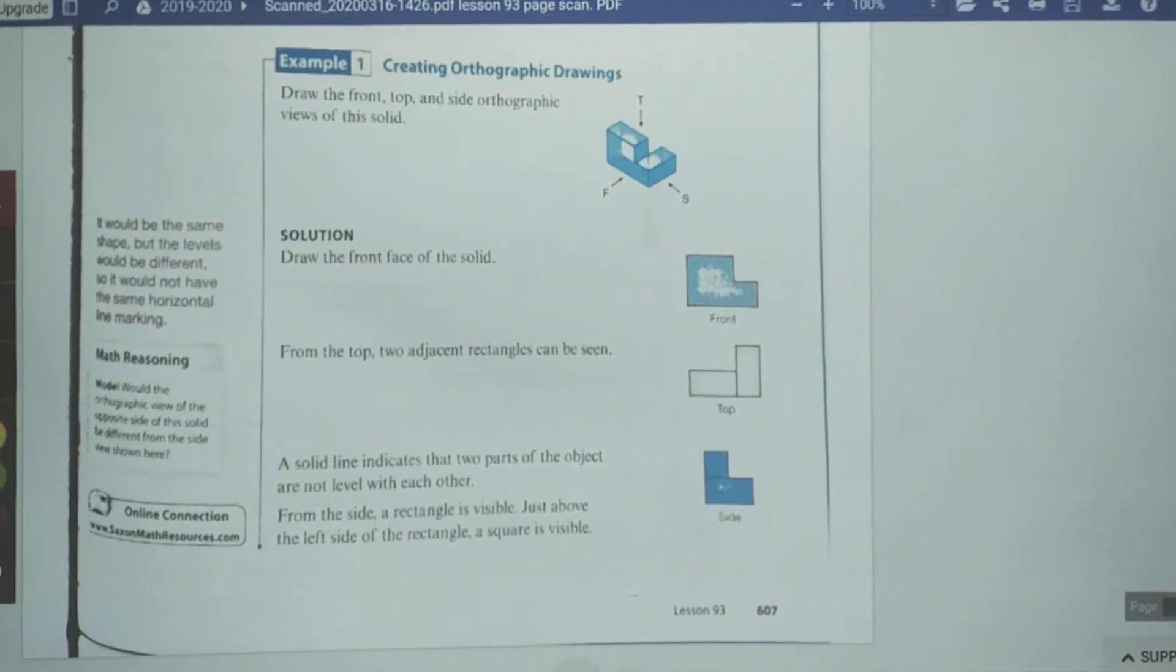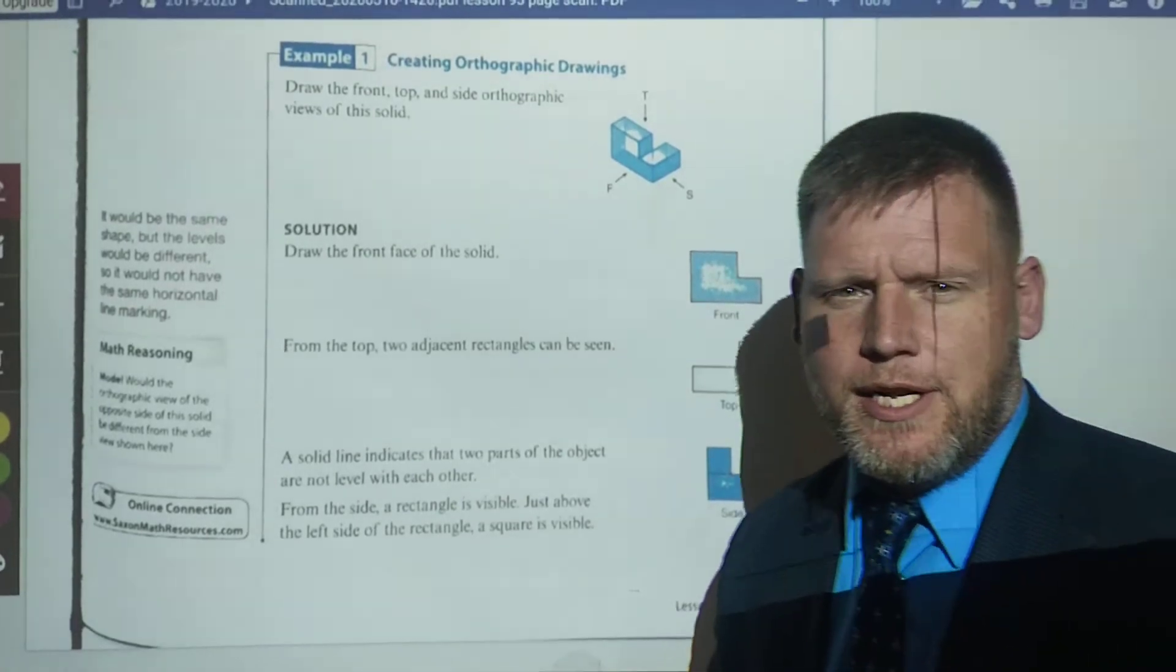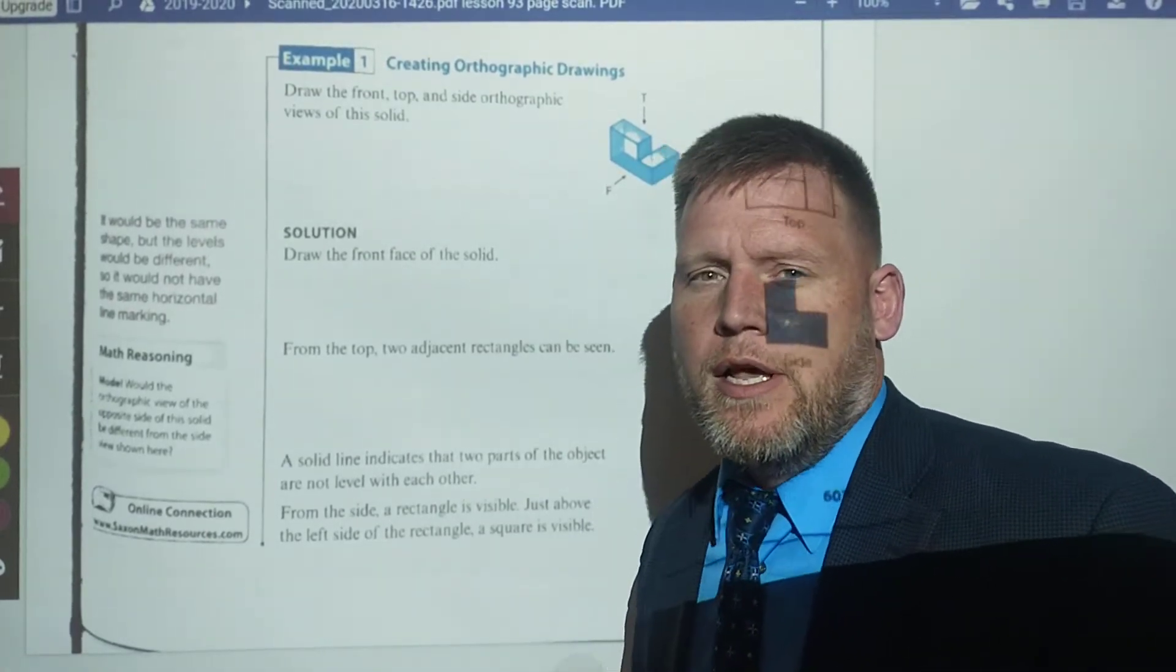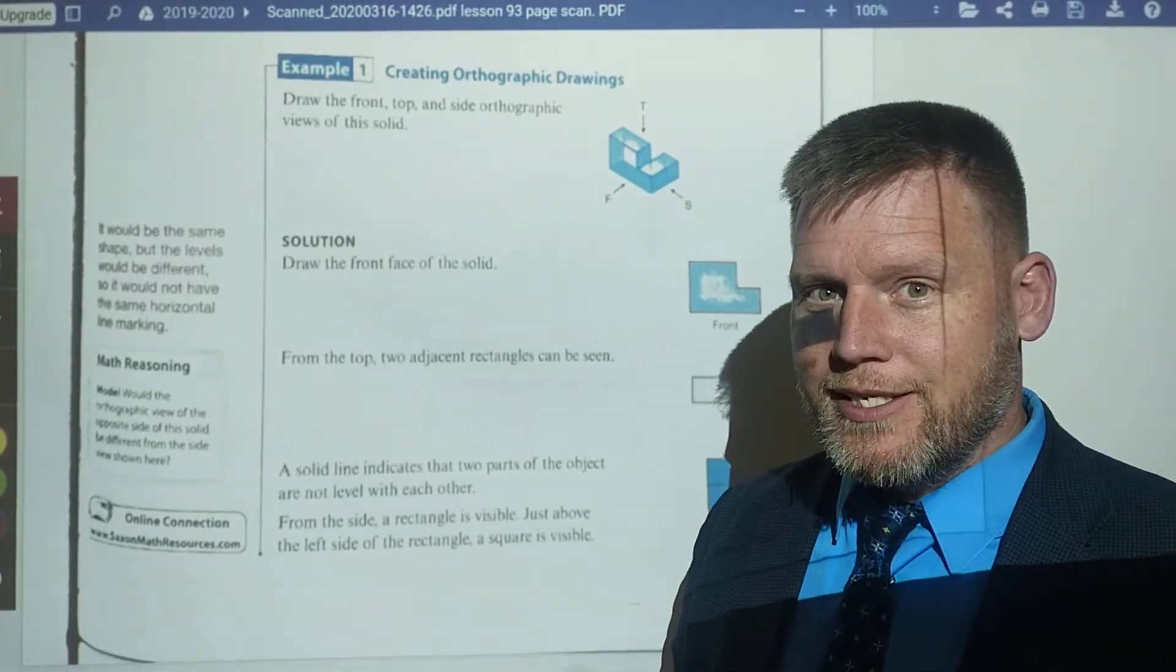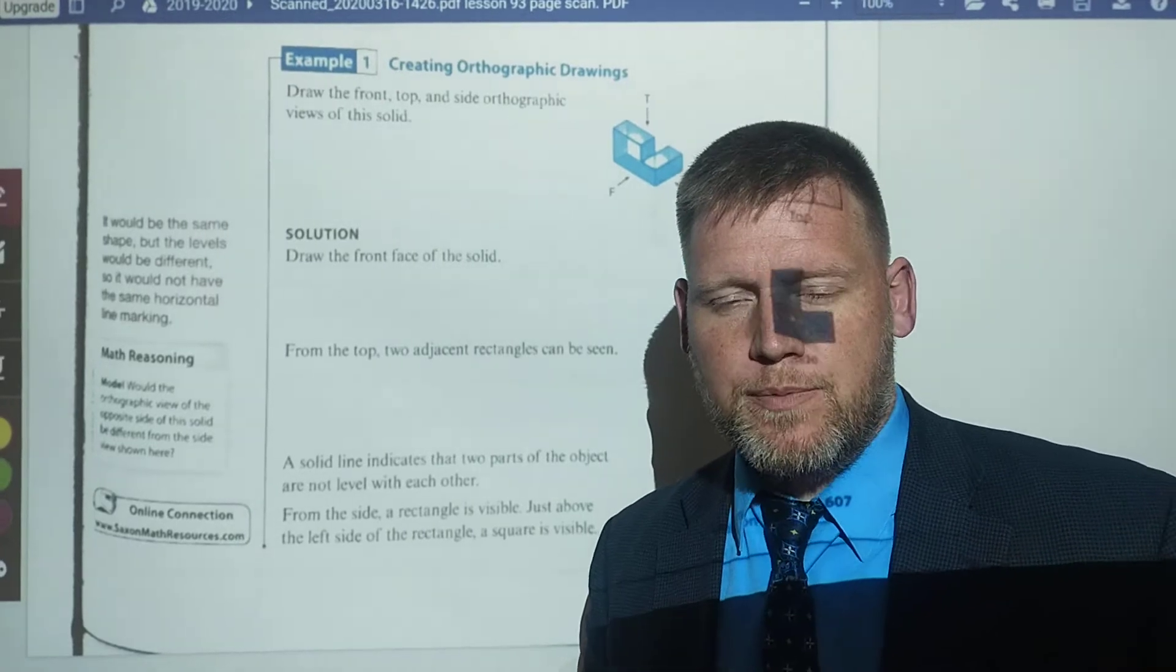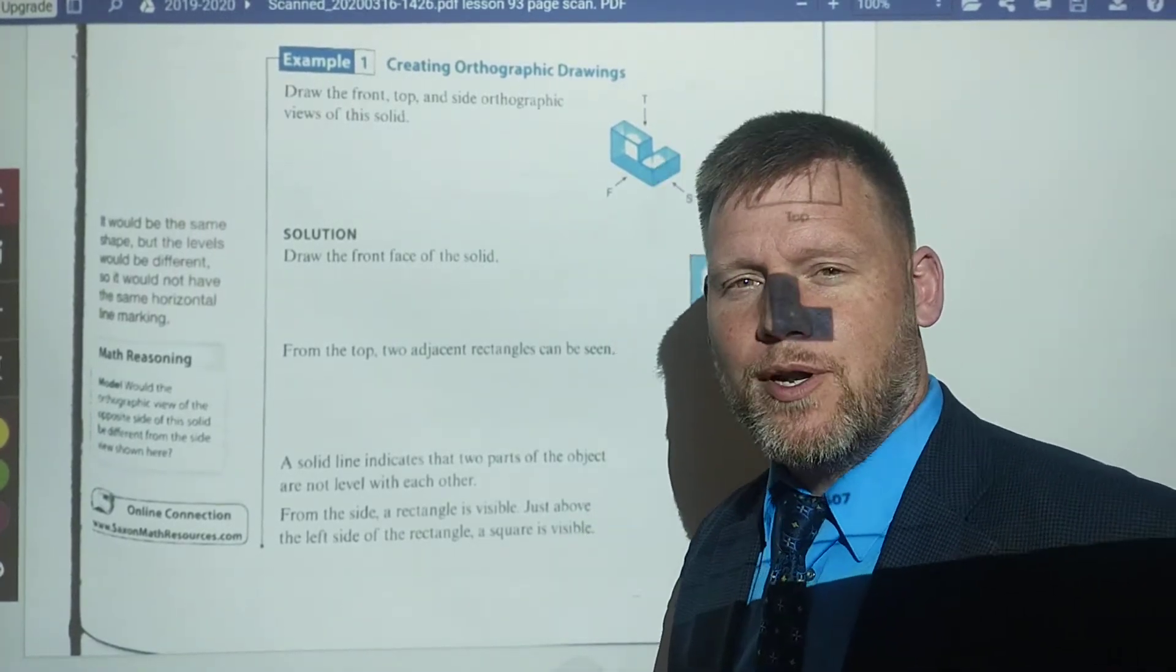This is Saxon Geometry, lesson 93, and we're going to talk about orthographic drawings. This is a really simple lesson for those of you in a digital world. Unfortunately, it's not as simple for me to put up on the board, especially with my lack of drawing skills and abilities in three-dimensional.